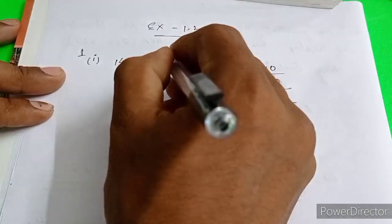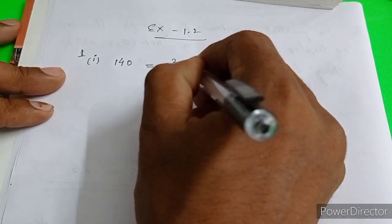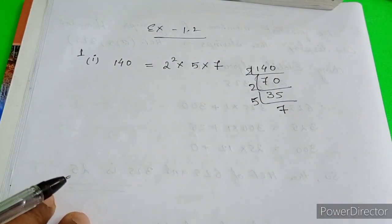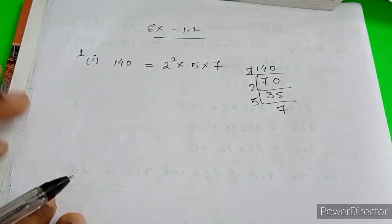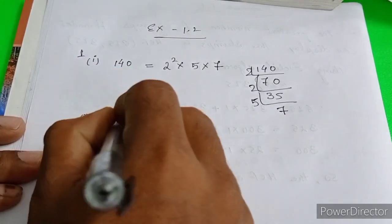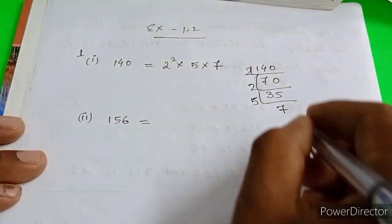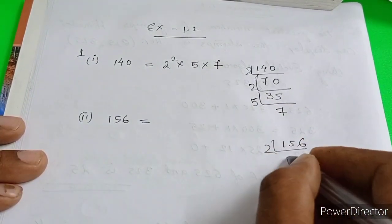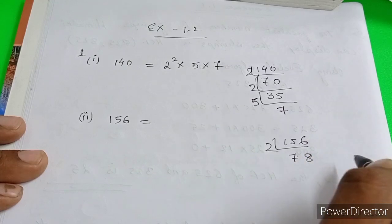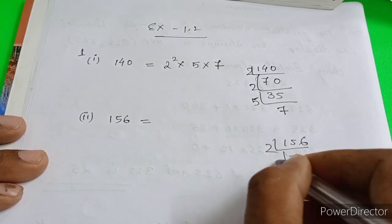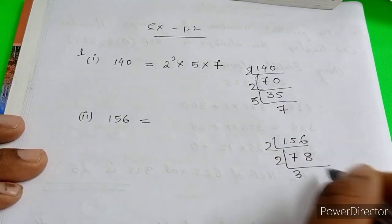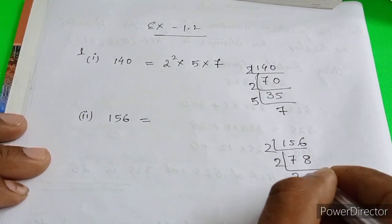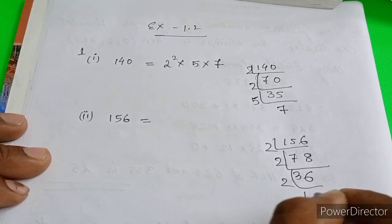So I can write it as 2 squared into 5 into 7. This is the product of the prime factors. Clear everyone, simple concept. Roman number two, 156. Same thing, 156: 2, 78, 2, 39, 3, 13.